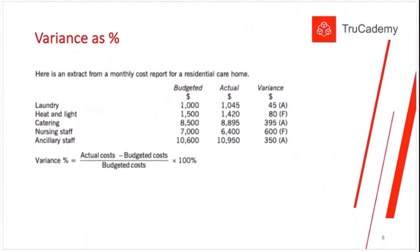Variances as a percentage — this is another way to report your information to the manager. In this report, for example for laundry, the budgeted cost was one thousand dollars, actual is one thousand forty-five, and the variance is forty-five dollars adverse. For nursing staff there is a six hundred dollar favorable variance. This is perfectly fine if you want to report variances with numbers.